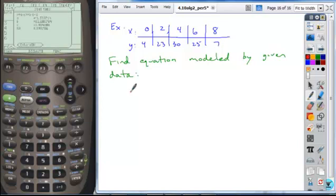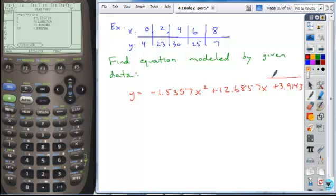And we get our equation here, which should confirm what we got on Excel, which is negative 1.5357X squared. Our B value, 12.6857X. And then our C value, 3.9143, approximately.